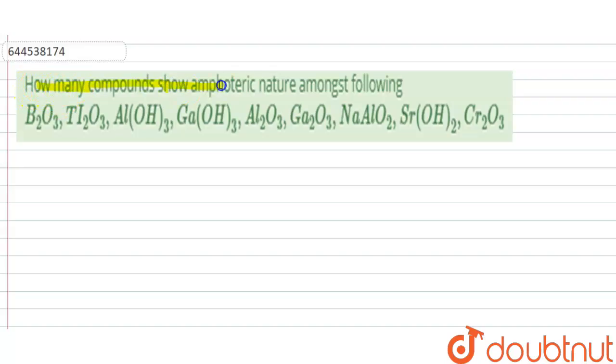How many compounds show amphoteric nature amongst the following? And these are our compounds: B₂O₃, Tl₂O₃, Al(OH)₃, Ga(OH)₃, Al₂O₃, Ga₂O₃, NaAlO₂, Sr(OH)₂, Cr₂O₃.